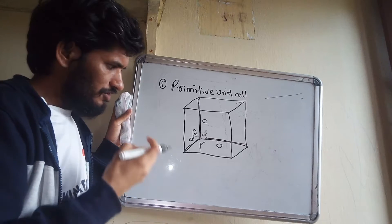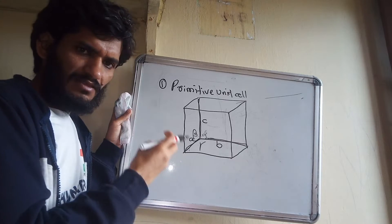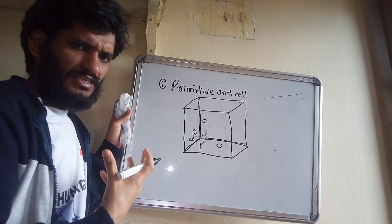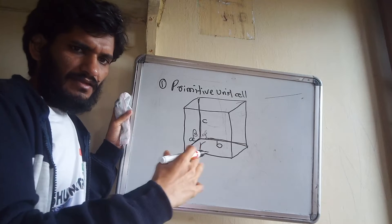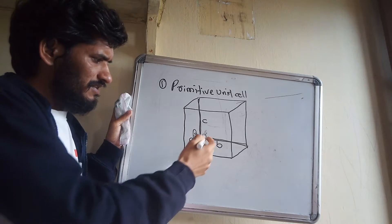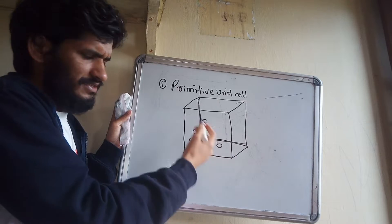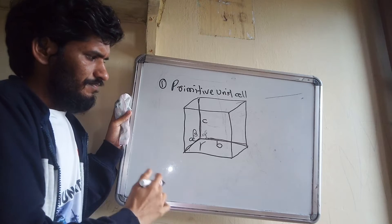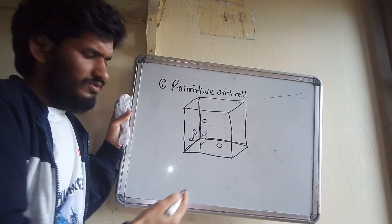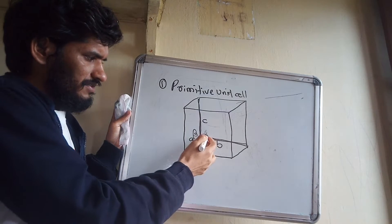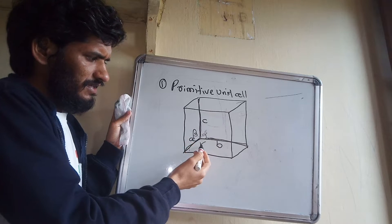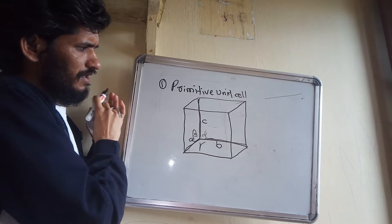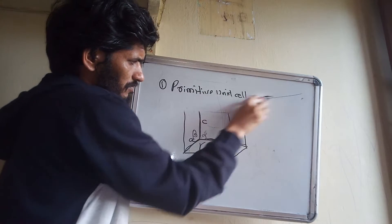The unit cell exists in three dimensions, so we take height as well. For a cubic unit cell specifically, the length, breadth, and height are all equal — a = b = c — so we write them all simply as a. Additionally, all three angles are equal: alpha = beta = gamma = 90 degrees for a cubic unit cell.